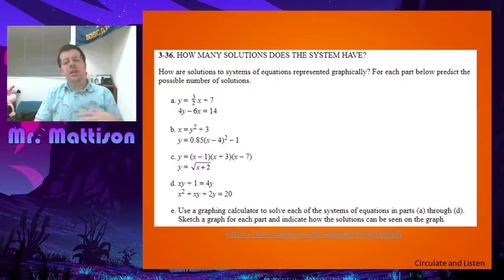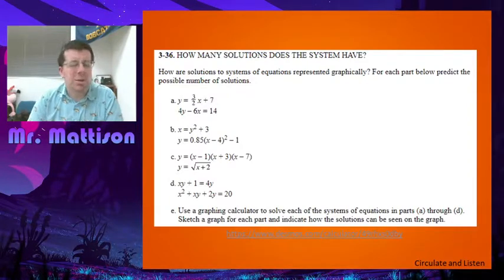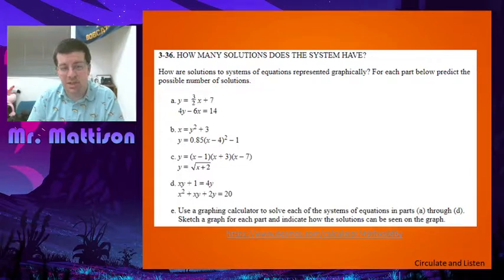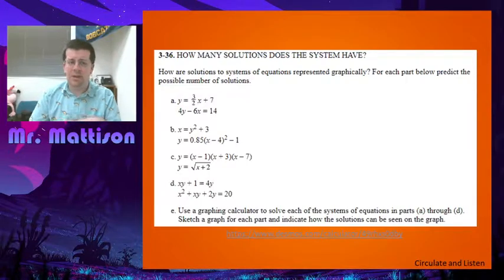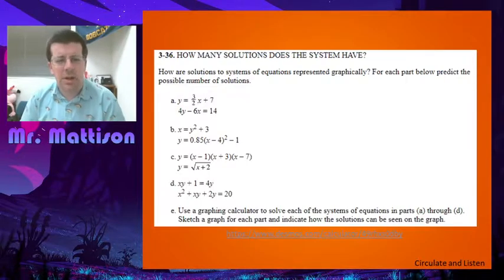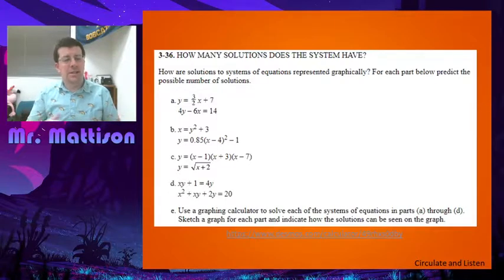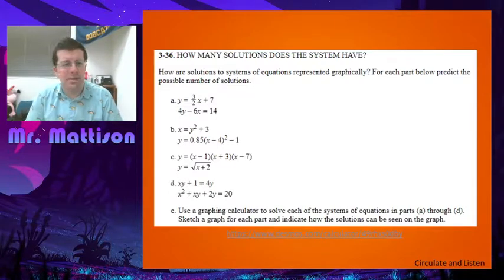So take a look at B, C, and D. Try and think about what shape graph that produces, and then based off of that shape, how many possible answers could you have? Not how many do you think there are, but how many could there be? Go ahead and pause, try that for B, C, and D, and then we'll talk about these.